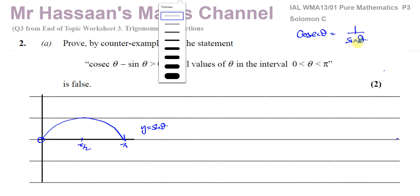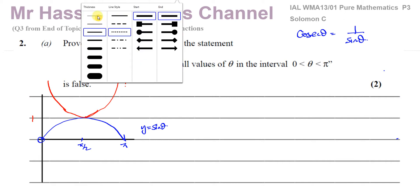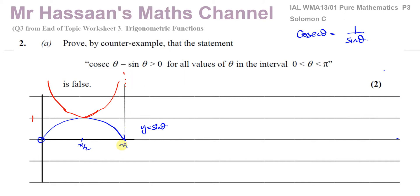As sine theta gets bigger, one over sine theta gets smaller, so cosec theta starts getting lower and lower. But when sine theta becomes one, cosec theta will also be one — because one over one is one — and sine theta becomes one at pi over two. So at pi over two, cosec theta will reach one, and then it will start going up again toward the asymptote at pi, getting closer and closer but never actually reaching pi.